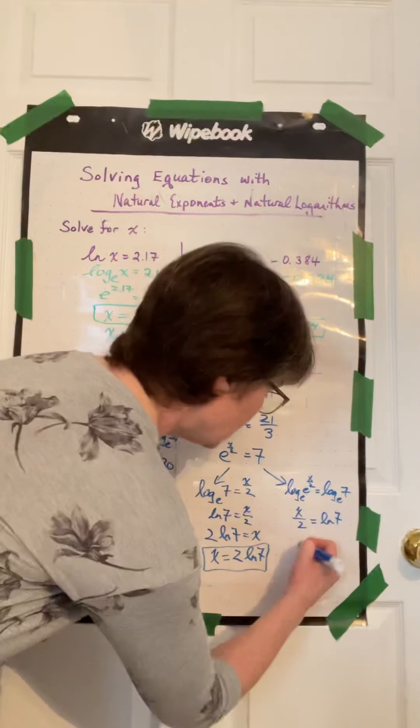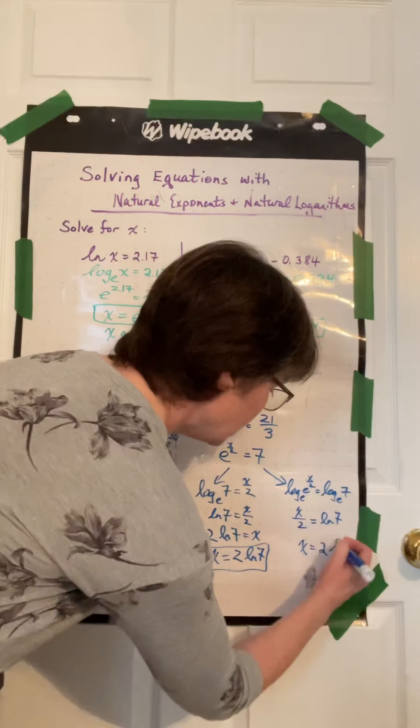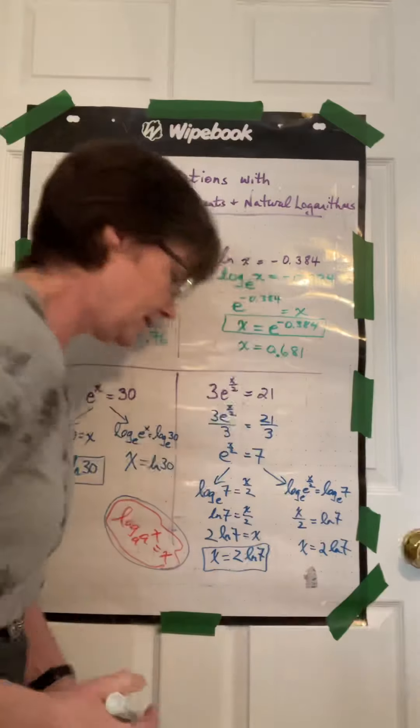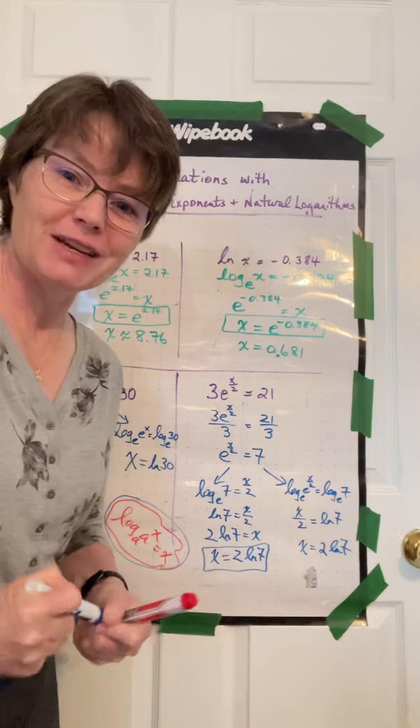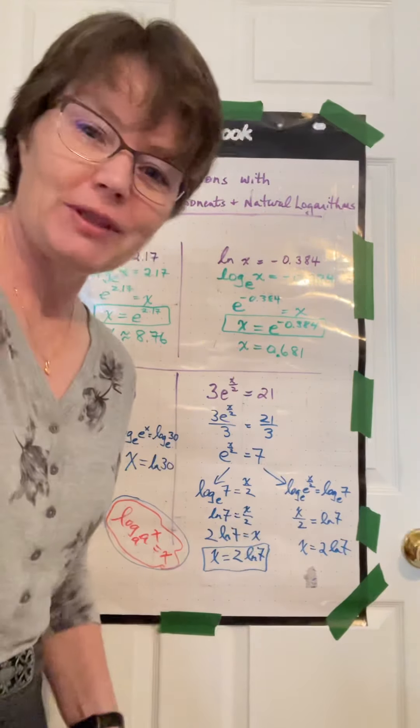Multiply both sides by 2. So x equals 2 ln 7. There's some fun solving equations with log base.